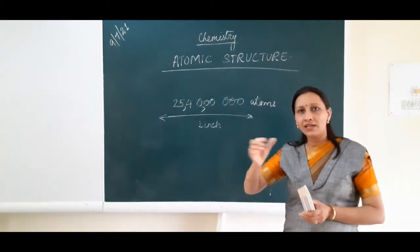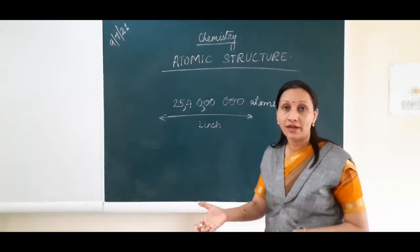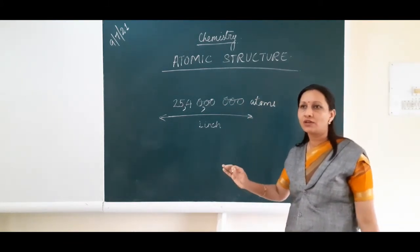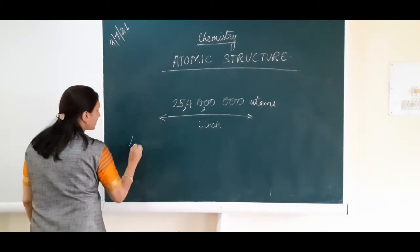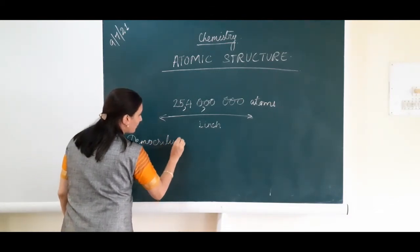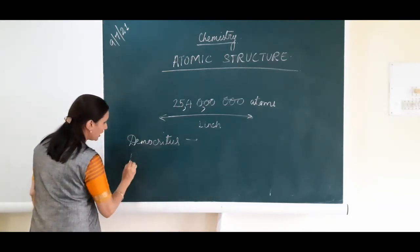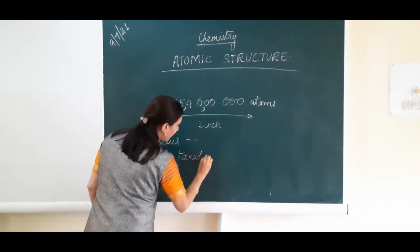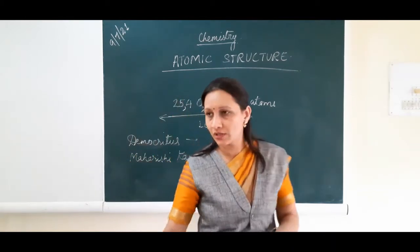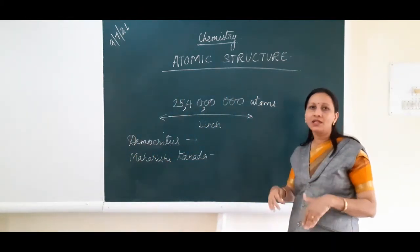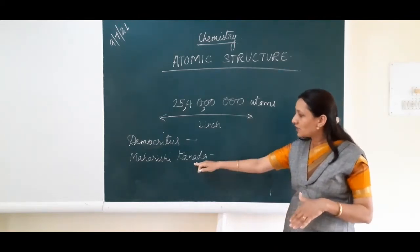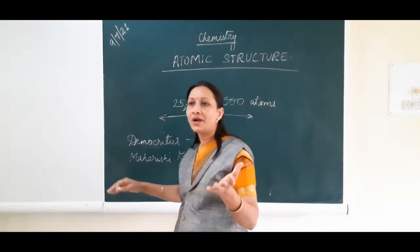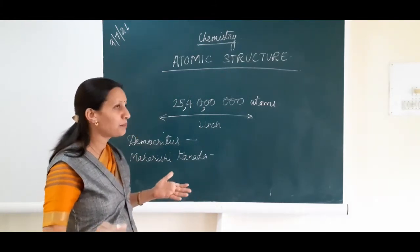The atom is so small that it cannot be seen, sometimes even under a powerful microscope. Many scientific thinkers worked on this atom — like Democritus, a Greek philosopher, and Maharshi Karnand, an Indian philosopher. Maharshi Karnand was calling it Anu and Paramanu — Anu means molecule and Paramanu means atom.